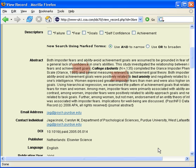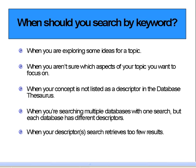So when should you search by keyword? When you are exploring some ideas for a topic. When you aren't sure which aspects of your topic you want to focus on. When your concept is not listed as a descriptor in the database thesaurus — more on descriptor searching in the next video. When you are searching multiple databases with one search, but each database has different descriptors.